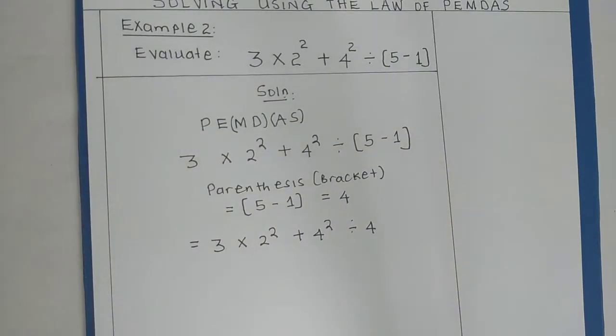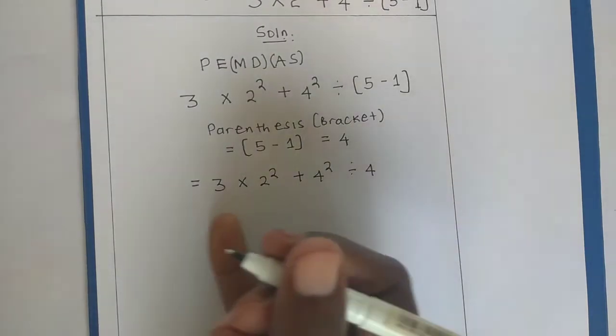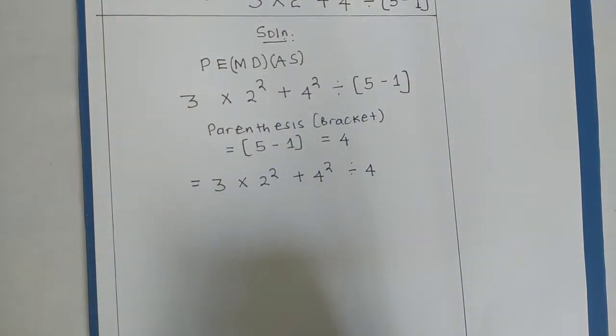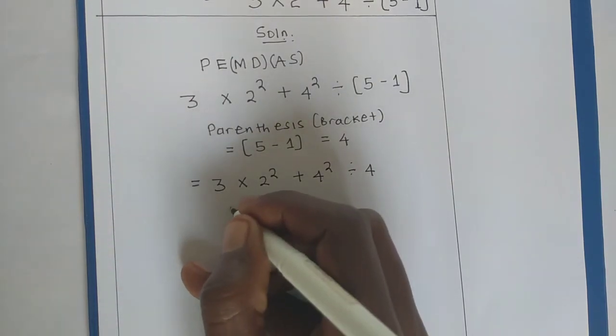Let's continue. So we shall have this as 3 times 2 squared plus 4 squared divided by 4. Next, we have to look at exponents.